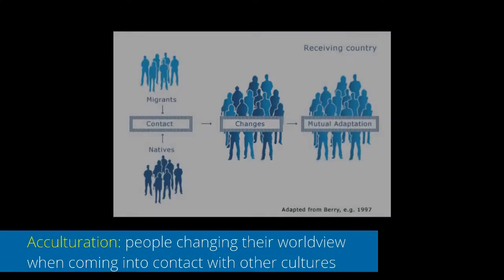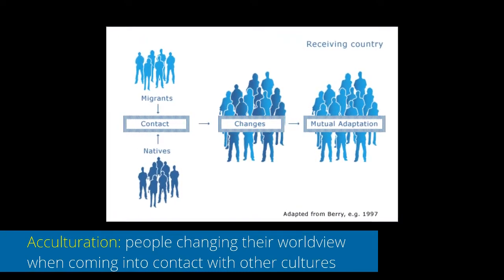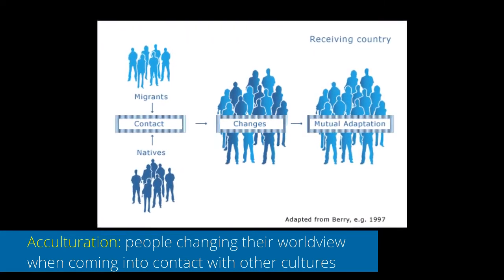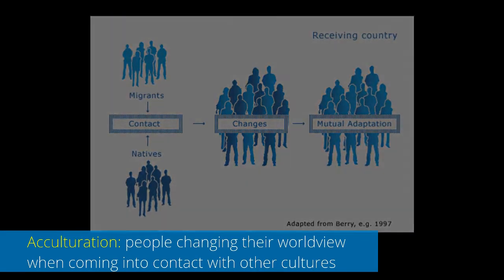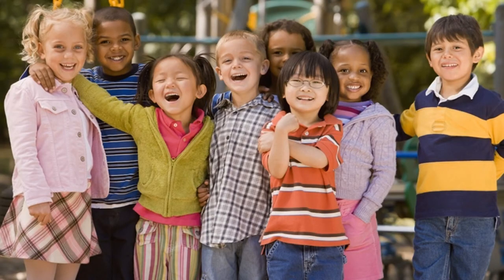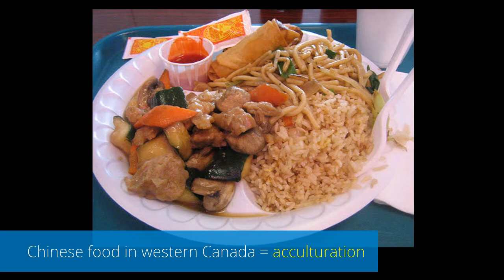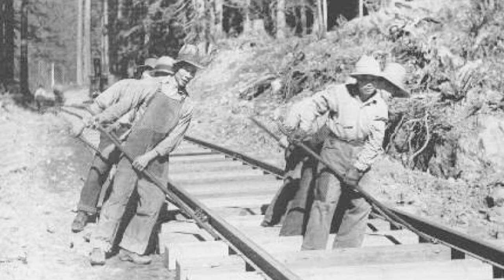A third challenge is acculturation — when different cultures change their worldview when they come into contact with each other. This is often the result of immigration, like in Canada, where there is a lot of cultural diversity and people from different cultural backgrounds change each other. An example of this is Chinese food in Western Canada.